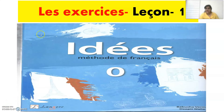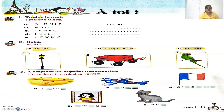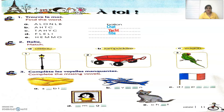Let's begin. Today we are going to solve the exercises of lesson one of the Idée Zéro book. The first exercise says 'Trouve le mot', that means find the word — jumbled words are given and we have to find the word. For example, 'balu' is ball, 'sha' is cat, 'yaach' is yacht, 'fear' is girl, and 'om' is man.